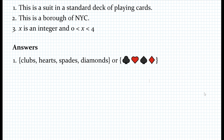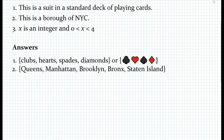What about the second problem? This is a borough of New York City — the solution set is actually all the five boroughs. For the final question, x is an integer and x is between 0 and 4, not including 0 and 4. The possible integers are 1, 2, and 3, as shown in the solution set.